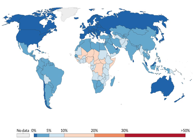Perinatal mortality rate measures the number of child deaths within the first week of birth per total number of births. Neonatal mortality rate measures deaths within the first 28 days of life. Infancy mortality rate measures deaths within the first 12 months of life. Under-5 mortality rate measures child deaths before the fifth birthday, per total number of births.